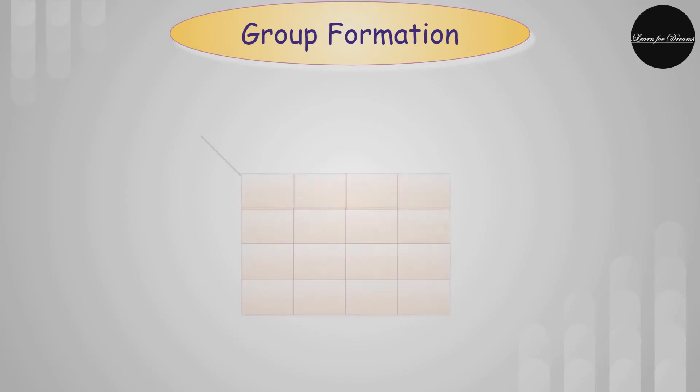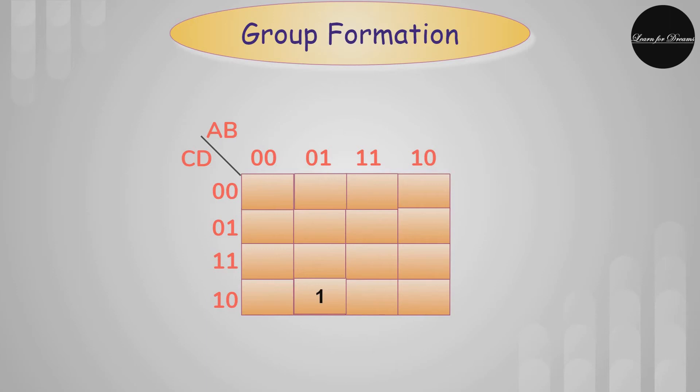Now we will start with the simplest example. For better understanding we will solve this example by the SOP method. For solving K-Map by SOP method, we will consider only one in the K-Map.